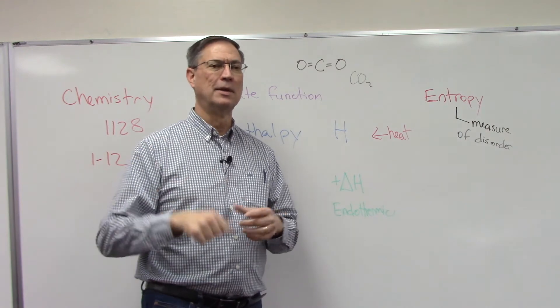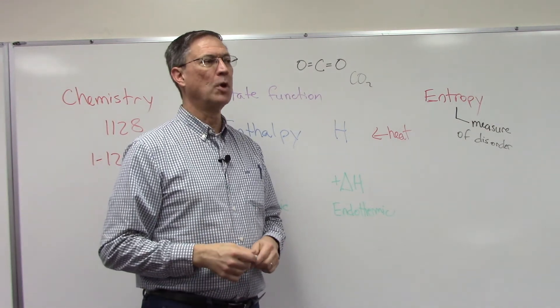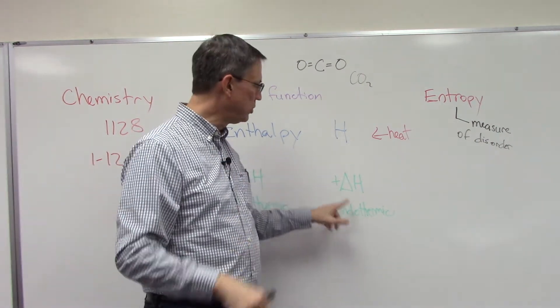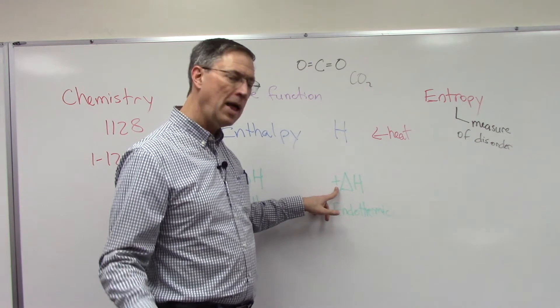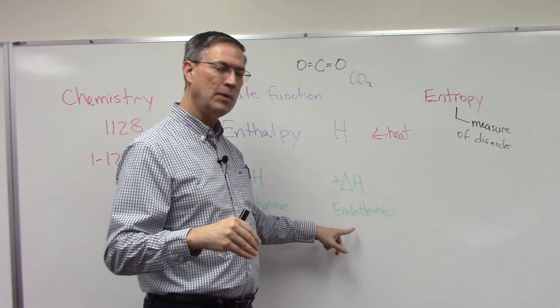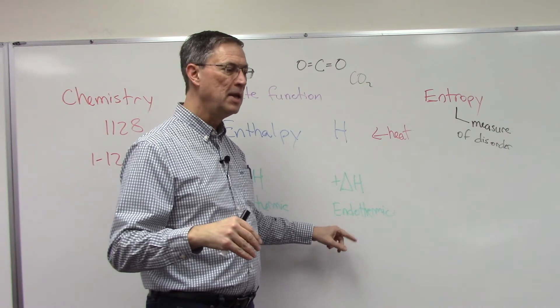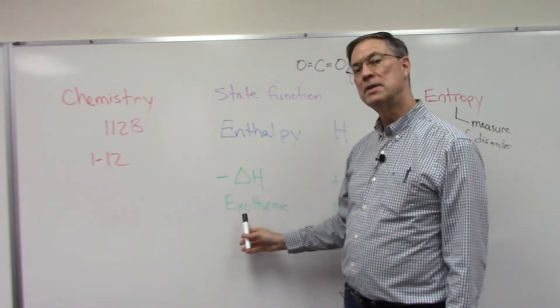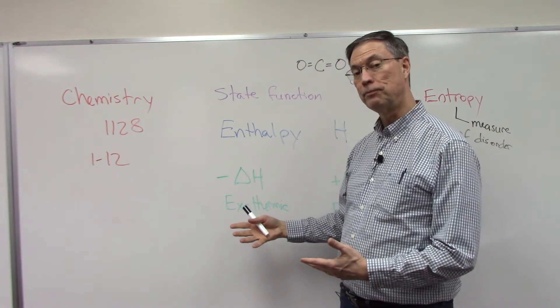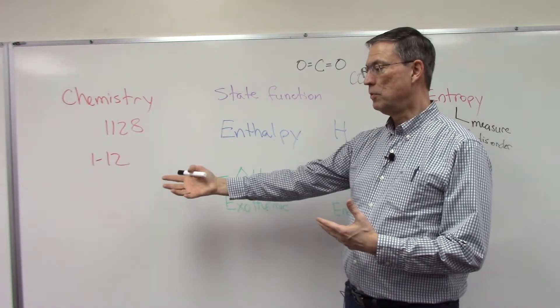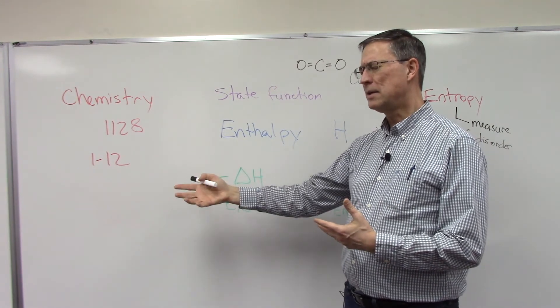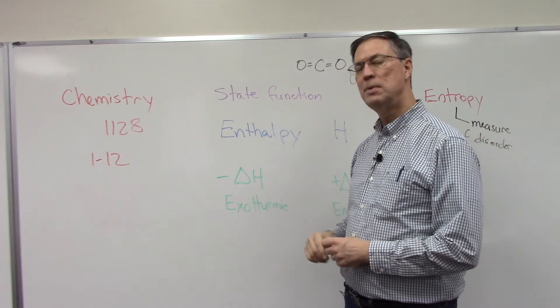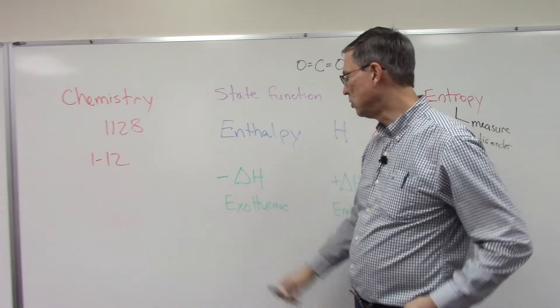When that happens, it's called endothermic. If we have to add energy, we're adding energy to it in order to get the reaction to take place. In an exothermic reaction, more energy is given off between the bonds from the original reactants and the bonds in the products. There's a net effect of energy, and that energy would be in the form of heat given off.